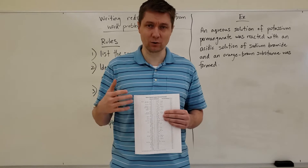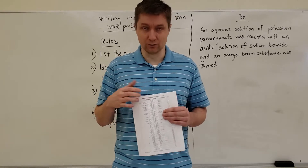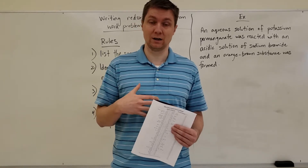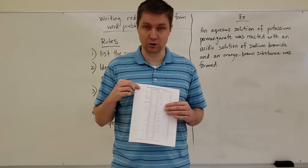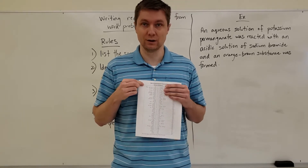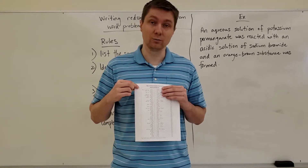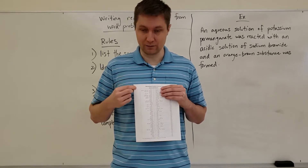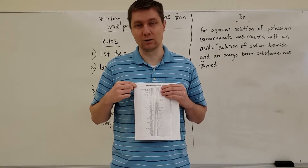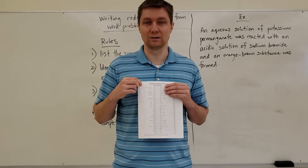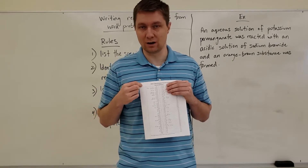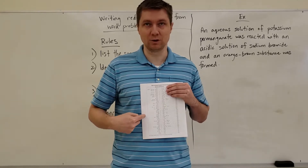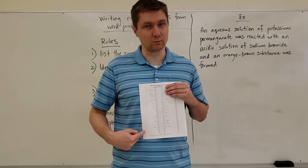Because F2 gains electrons, that makes it an oxidizing agent. In your booklet, make sure you write in the top left-hand corner: SOA — strongest oxidizing agent. All the oxidizing agents become weaker as we move down the chart.